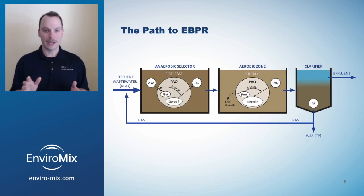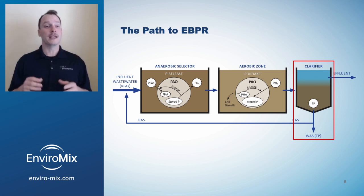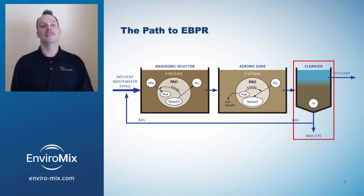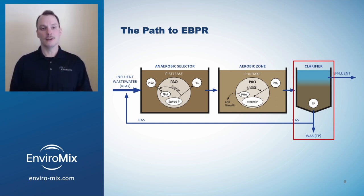The final step in the EBPR process occurs in the clarifier. The PAOs leave the mainstream process through waste-activated sludge, leaving the treated water with a very low concentration of phosphorus.